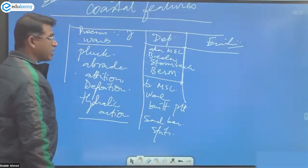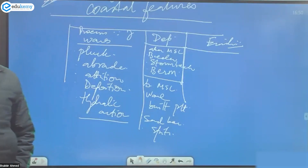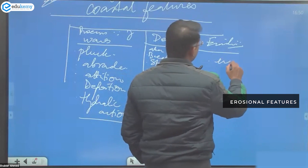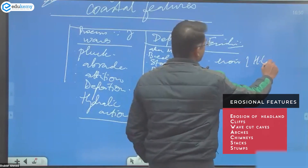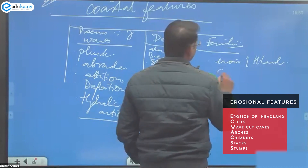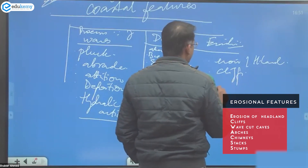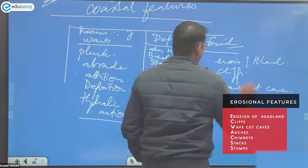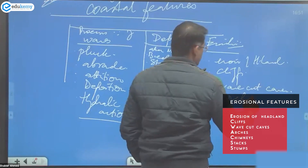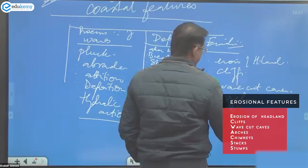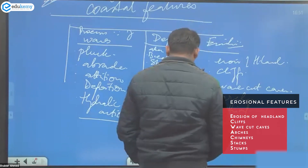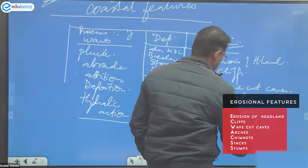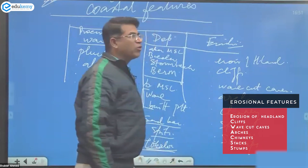Hydraulic action - the force of the water itself - is also a wave process. Erosional features include erosion of the headland, cliffs, wave-cut caves, arches, chimneys, stacks, and stumps. The remnants are called stumps.